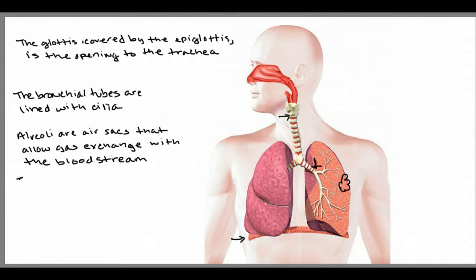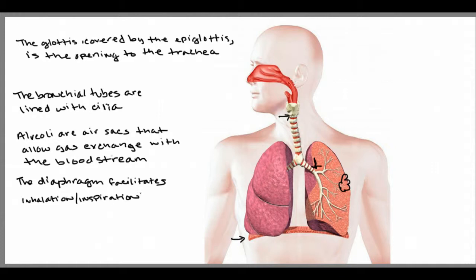The diaphragm is part of a different body system but has functions in this one. It is a dome-shaped muscle that helps facilitate inhalation, also called inspiration, which is an active process — the diaphragm and intercostals contract and expand the chest cavity. Exhalation, also called expiration, is a passive process in which the diaphragm and intercostal muscles relax. The diaphragm helps facilitate these movements and processes.